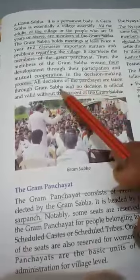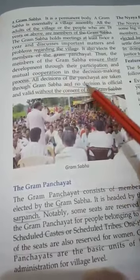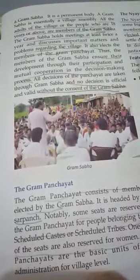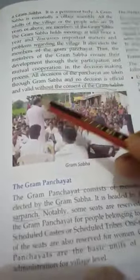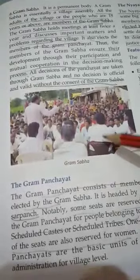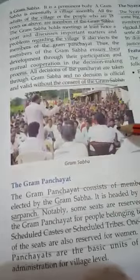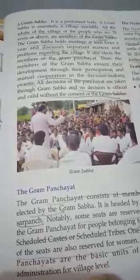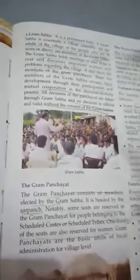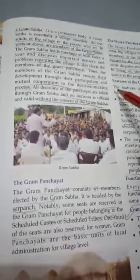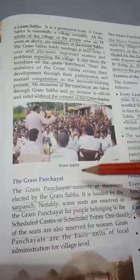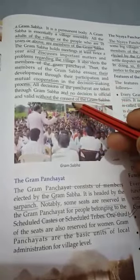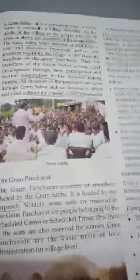All decisions of the Panchayat are taken through the Gram Sabha, and no decision is official and valid without the consent of the Gram Sabha. So when the Panchayat members take a decision and present it to the Gram Sabha, if the people agree that it is for the betterment of the village, they will consent to the decision and then accordingly it becomes final.